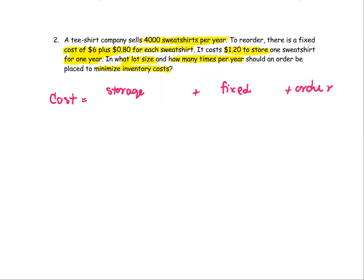Let X equal the number of the lot size. Then the number of orders is going to be the total, which is 4,000, divided by X. This is similar to the notation we used last time.